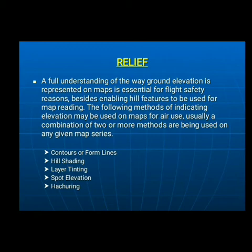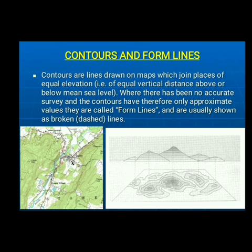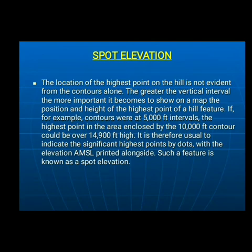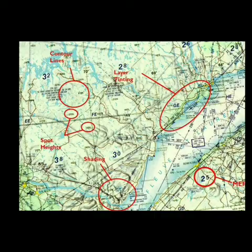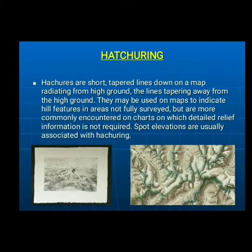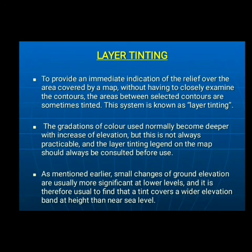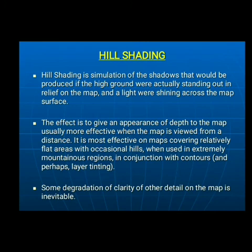Relief methods include: contours or form lines — lines drawn on the map joining points of equal elevation, with points of approximate elevation shown as broken lines; spot elevation — height points represented by a point with the elevation shown, used to supplement contours; hachuring — short lines on the map radiating from higher ground to lower, usually used when detailed information is not needed; layer tinting — areas between contours are tinted or colored to indicate relief, usually getting darker with higher elevation; and hill shading — higher ground is represented by shadows, giving an appearance of depth to the map, most effective in flatter areas.